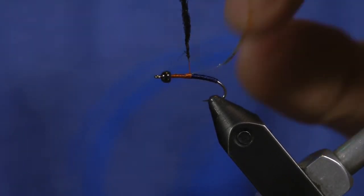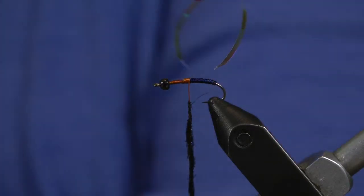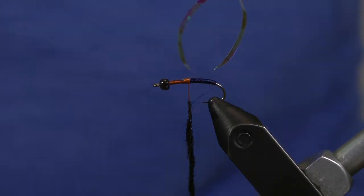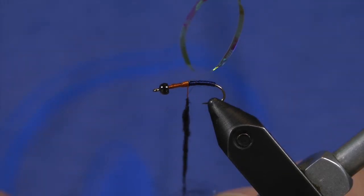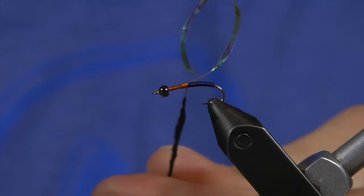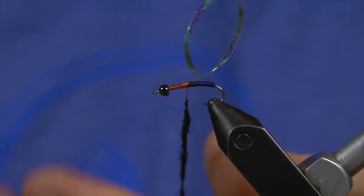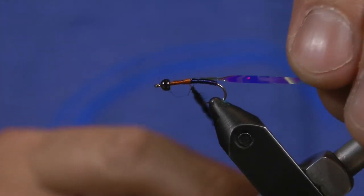You can see how tight that whole thing is wrapped there. This is designed to maintain that really slim, scrawny profile of this fly.